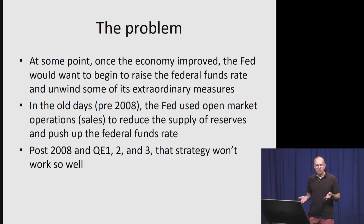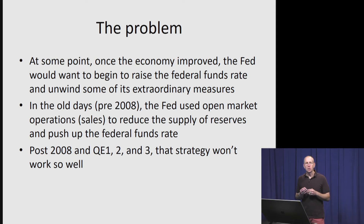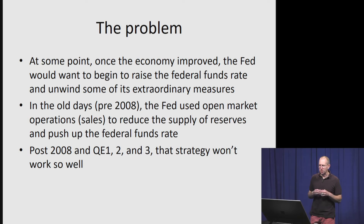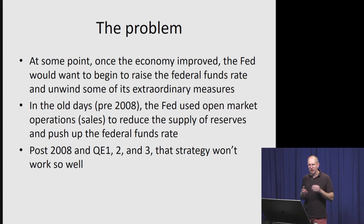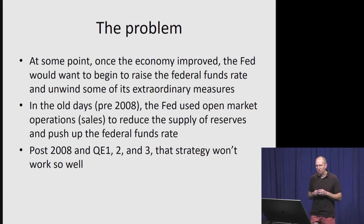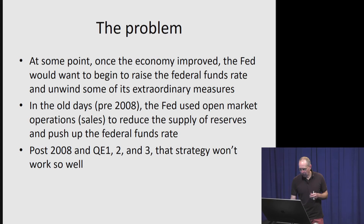This brings us to a new problem. At some point, once the economy improved, the Fed would want to start to raise the federal funds rate and unwind some of its extraordinary measures in terms of its balance sheet. In the old days, if the Fed wanted to raise the federal funds rate, they would have simply used open market operations — in other words, sales of Treasury securities — to shift the supply of reserves curve back to the left, pushing up the federal funds rate through standard supply and demand. However, since QE1, QE2, and QE3, that strategy isn't going to work out quite as well.